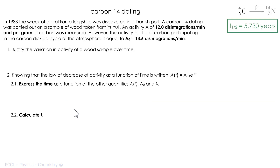I offer you an exercise. Here is the problem statement — stop and try to do it. It is about a wooden boat that was discovered: it's a Drakkar, a Viking ship. It has not been manufactured recently. We measure the activity of a sample of wood taken from the hull: there are 12 disintegrations per minute per gram, whereas in the atmosphere and in living matter such as wood it is 13.6.